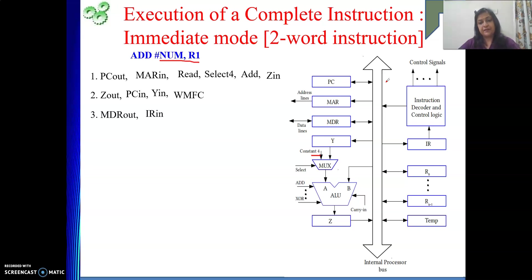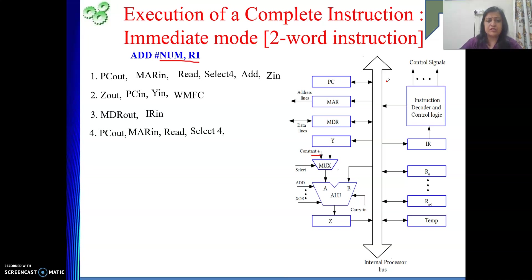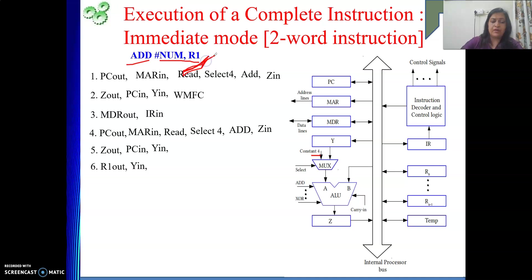The address of 'num' is in PC as well as in Y register. But there is no way to give Y register content on the bus directly. So: PC out, MAR in — because we need to get 'num' from memory. Then give the read signal. After giving the read signal, we can increment PC to point to the next instruction: select 4, add, Z in. Then Z out, PC in, Y in — Y in is done as an extra step. Then R1 out, Y in — because the other operand is in R1 and we are going to perform an add. Then WMFC.